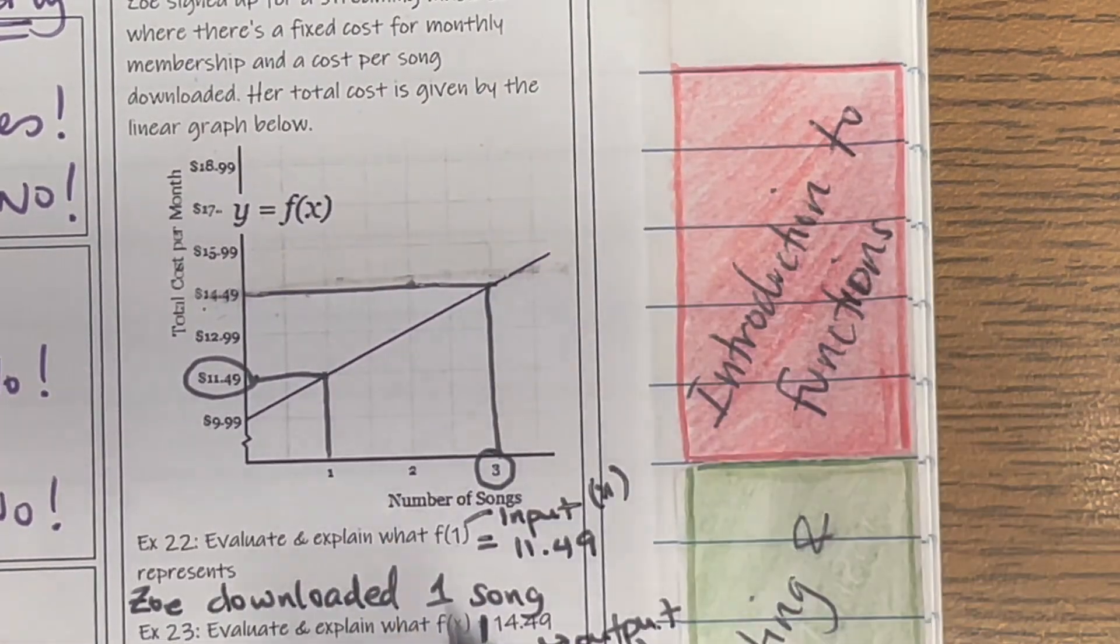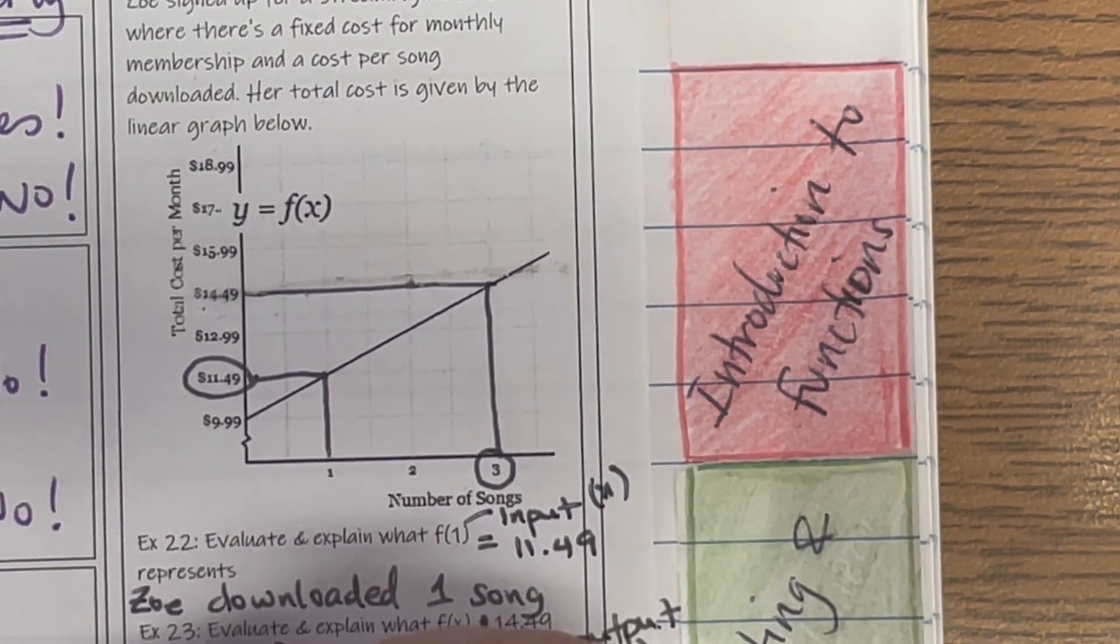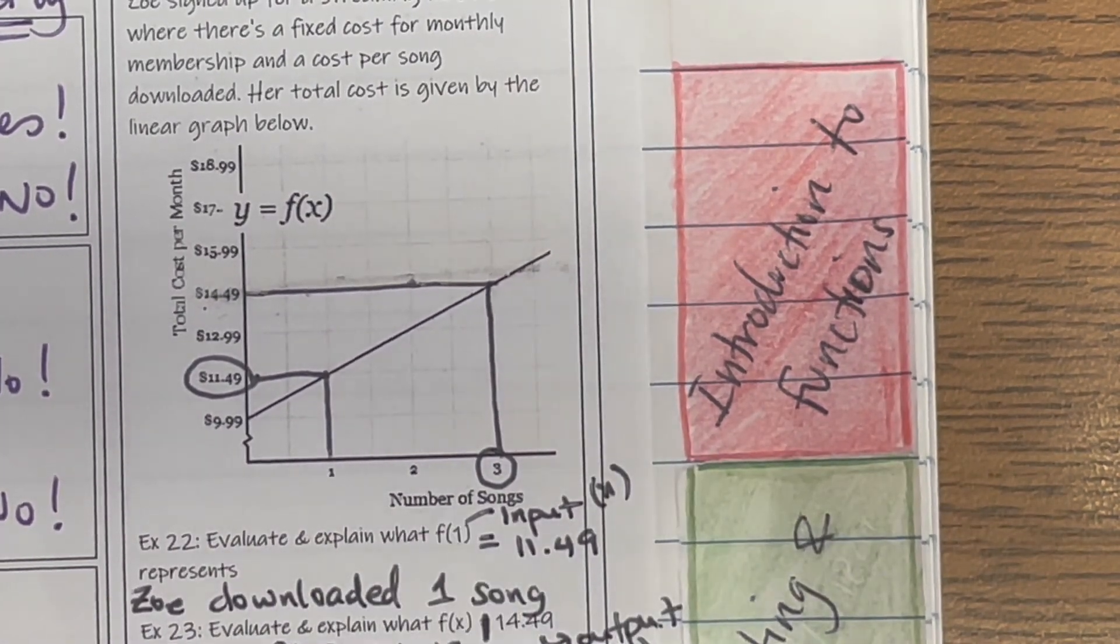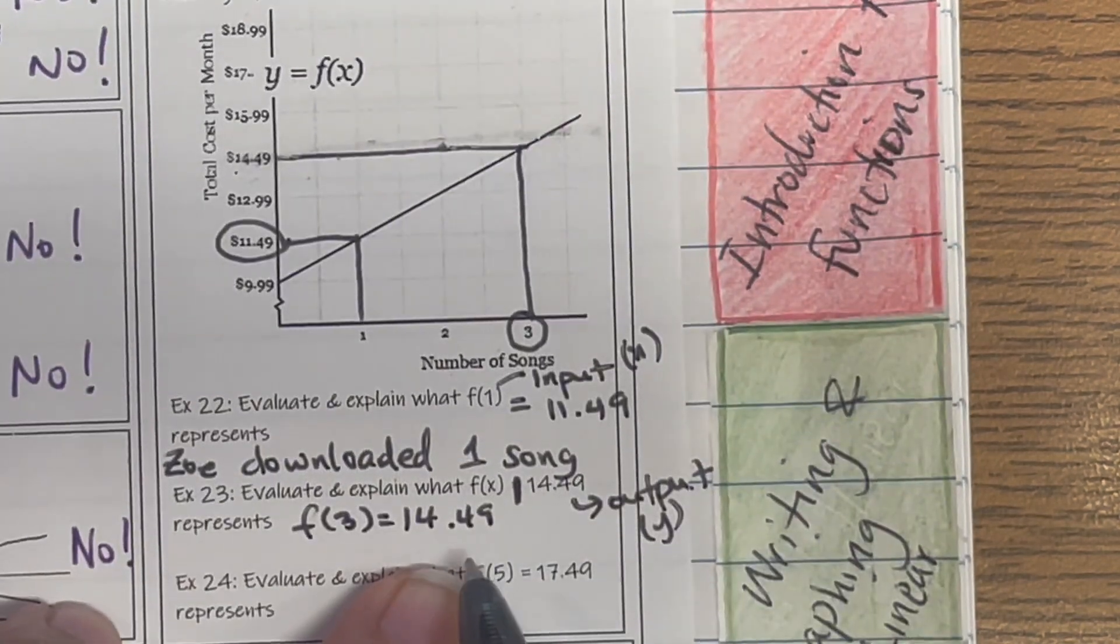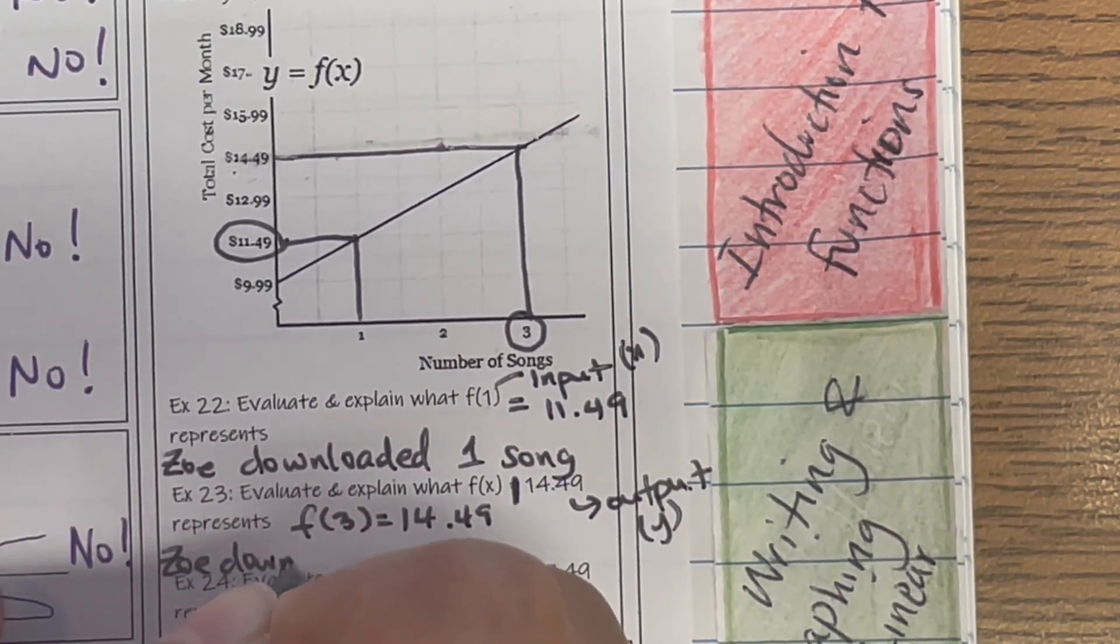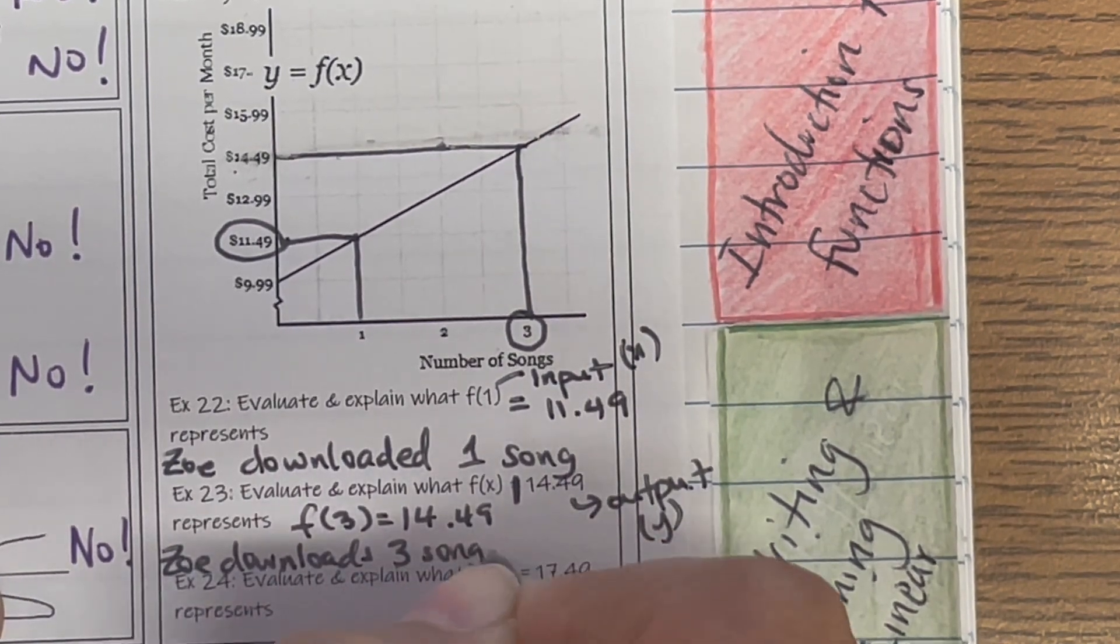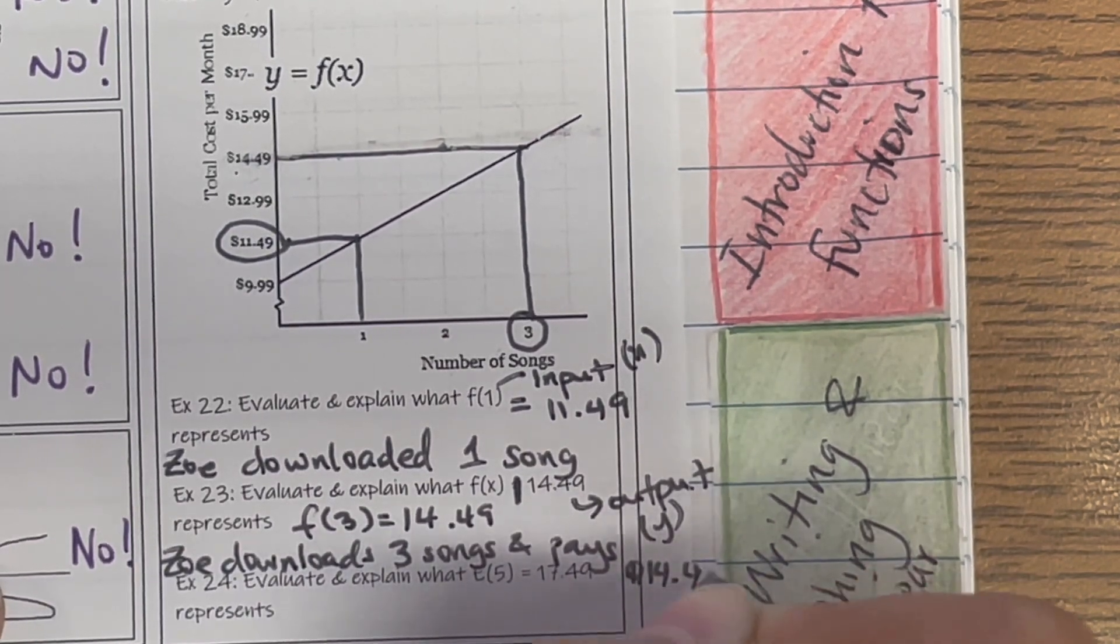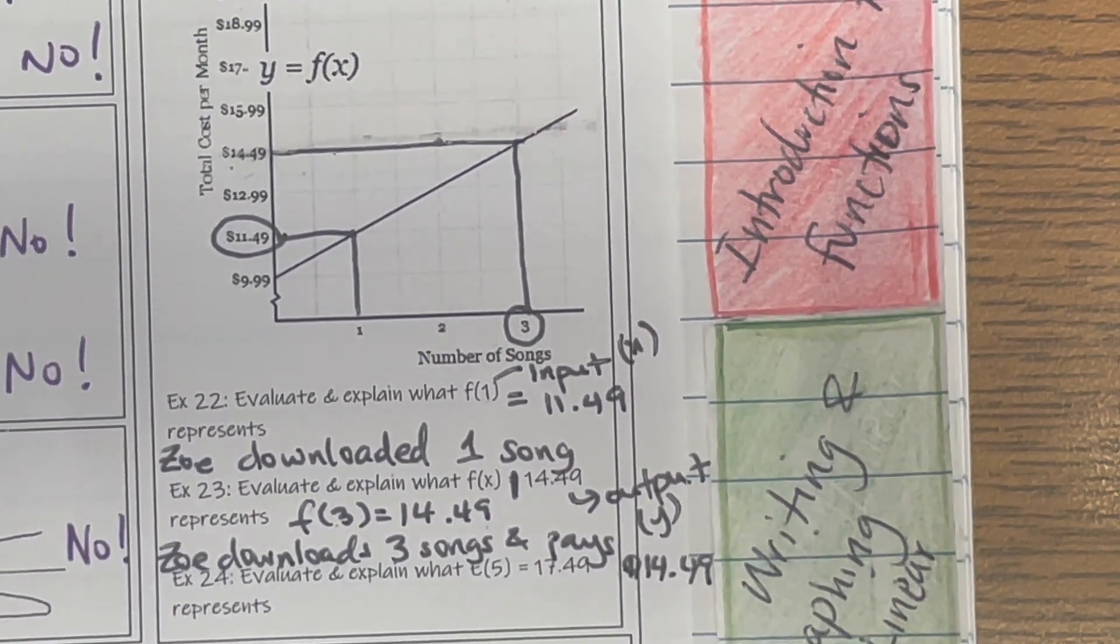So this time, my input is going to be 3. So evaluate. So this is going to be F(3) = $14.49. So Zoe downloads three songs and pays $14.49 for the three songs. Let's go ahead and write that down. Zoe downloads three songs and pays $14.49 for the songs.